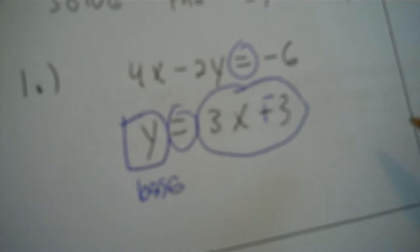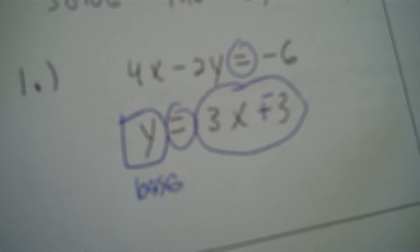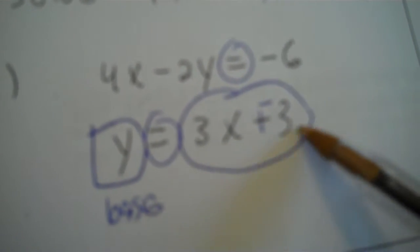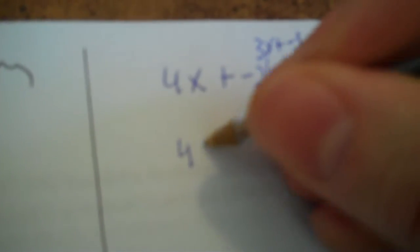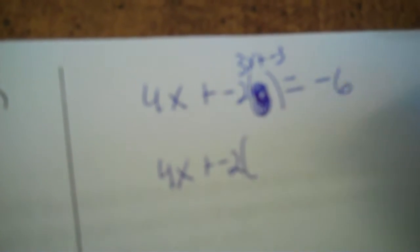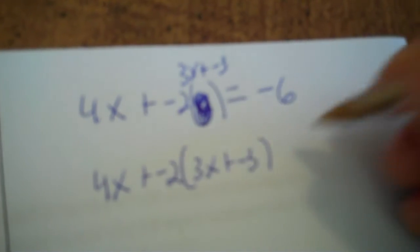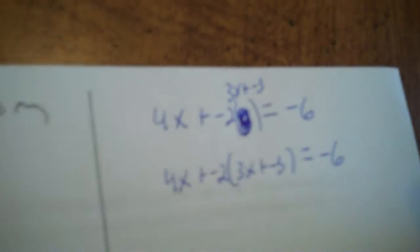If x is the base, you parenthesize x. If y is the base, you parenthesize y. Then 3x plus negative 3. So you have 4x plus negative 2 times 3x plus negative 3 equals negative 6.